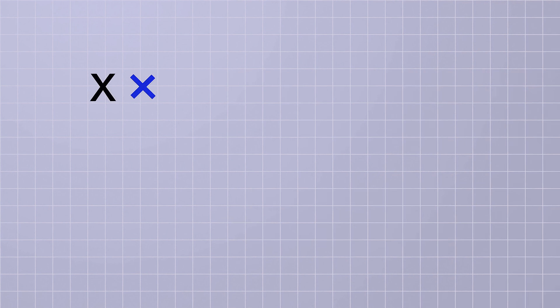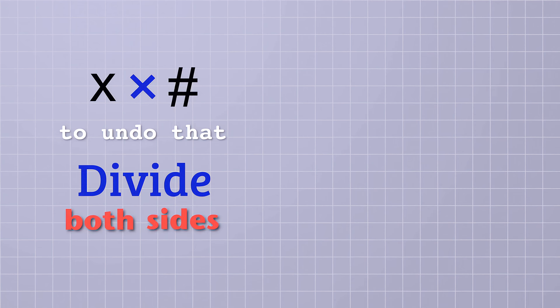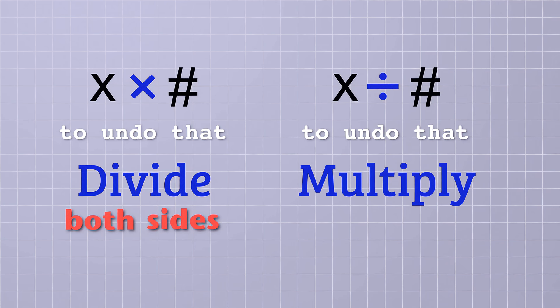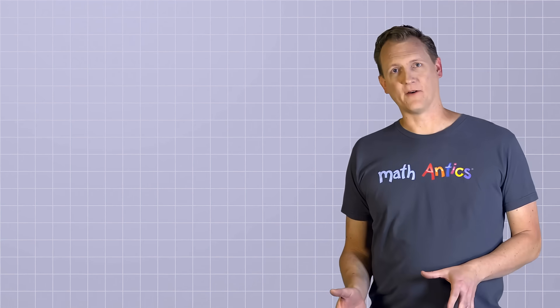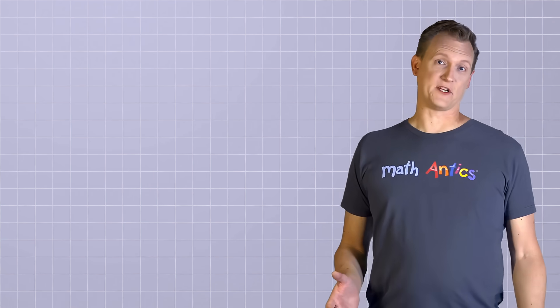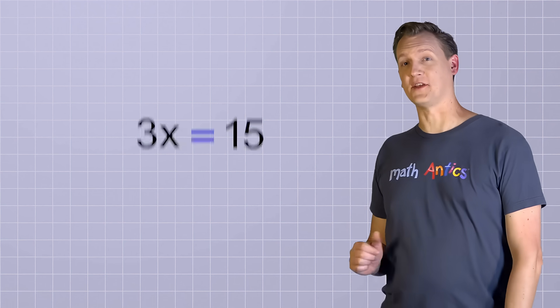If an unknown is being multiplied by a number, to undo that, we need to divide both sides by that number. But if an unknown is being divided by a number, to undo that, we need to multiply both sides by that number. Now don't worry if that sounds a little confusing right now. It'll make a lot more sense after you've seen a few examples.